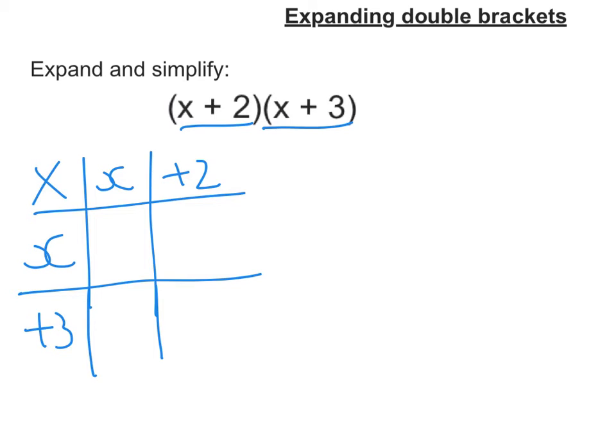Now in this grid I'm going to multiply terms together. So in this first one here I'm going to do x times x. So that gives me x squared.